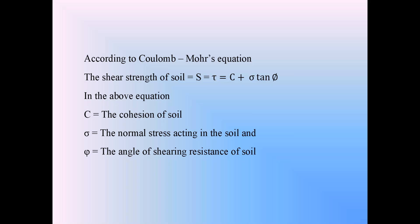In that equation, S is the shear strength of soil, also indicated as tau. C is the cohesion in the soil — between the soil particles there is an attraction force called cohesion. Sigma is the normal stress acting on the soil, and phi is the angle of shearing resistance of the soil.